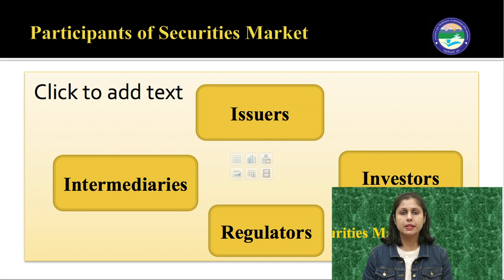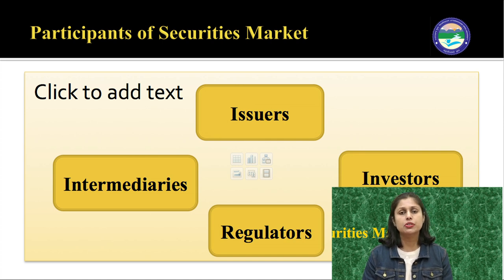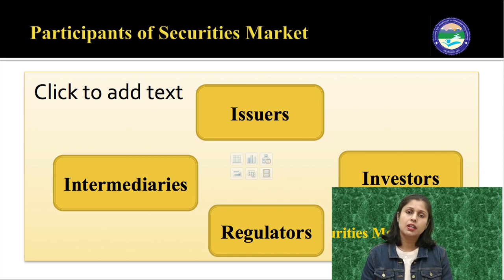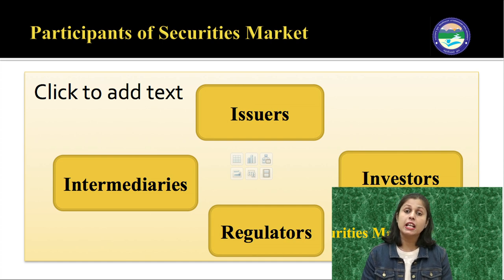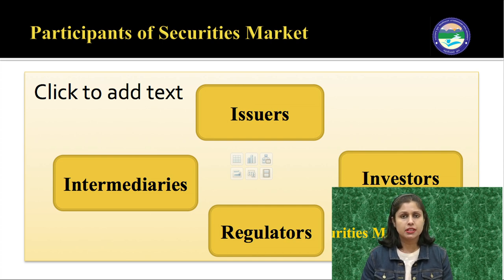Now we will discuss the participants of the securities market. First are the issuers — those who issue financial securities. These include companies, both public and private, government, banks, and financial institutions. Second are investors — those who invest in financial securities. These include individuals, companies that invest their excess funds in other companies, and government also investing in other securities.